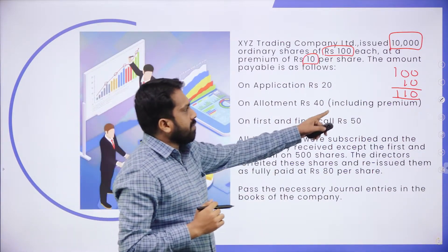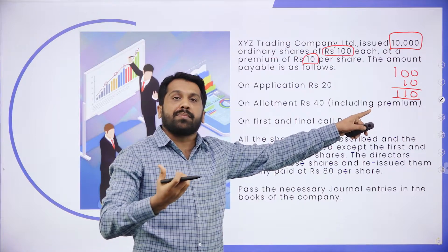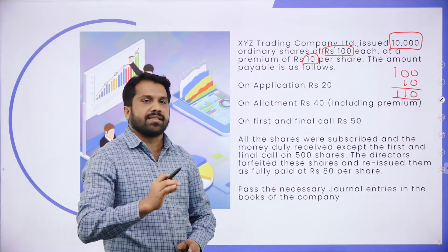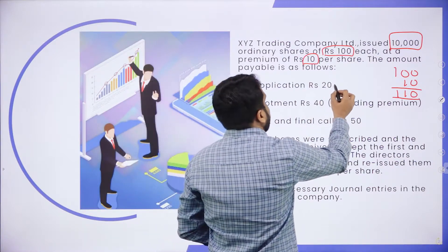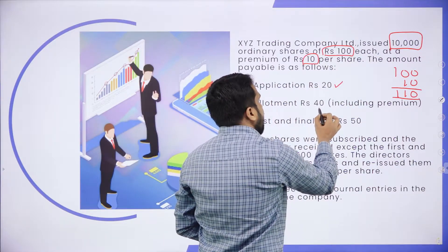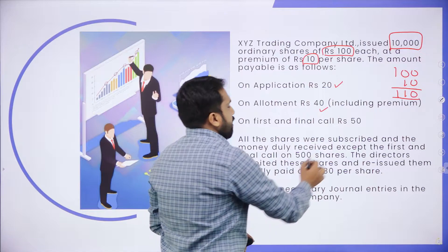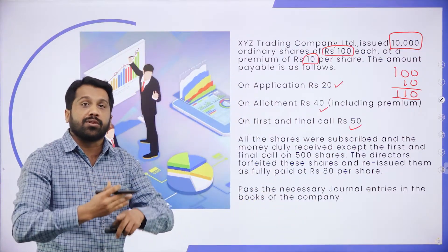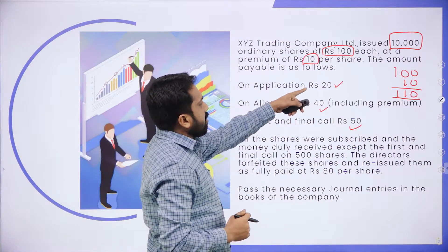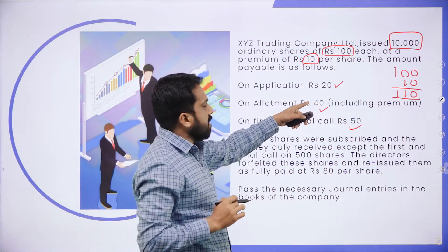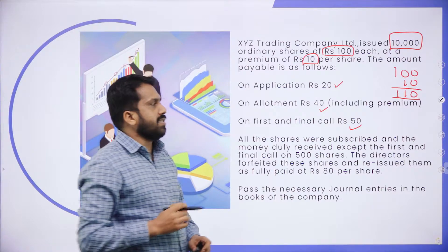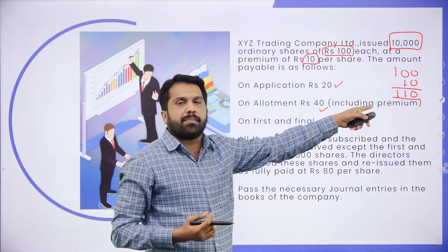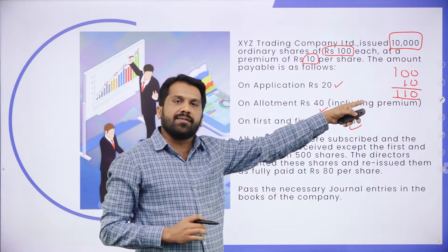Whatever total we got, we should match it with individual installments. Application: ₹20. Allotment: ₹40. First and final call: ₹50. Total: 20 + 40 + 50 = 110. So the total of these three matches your total value.